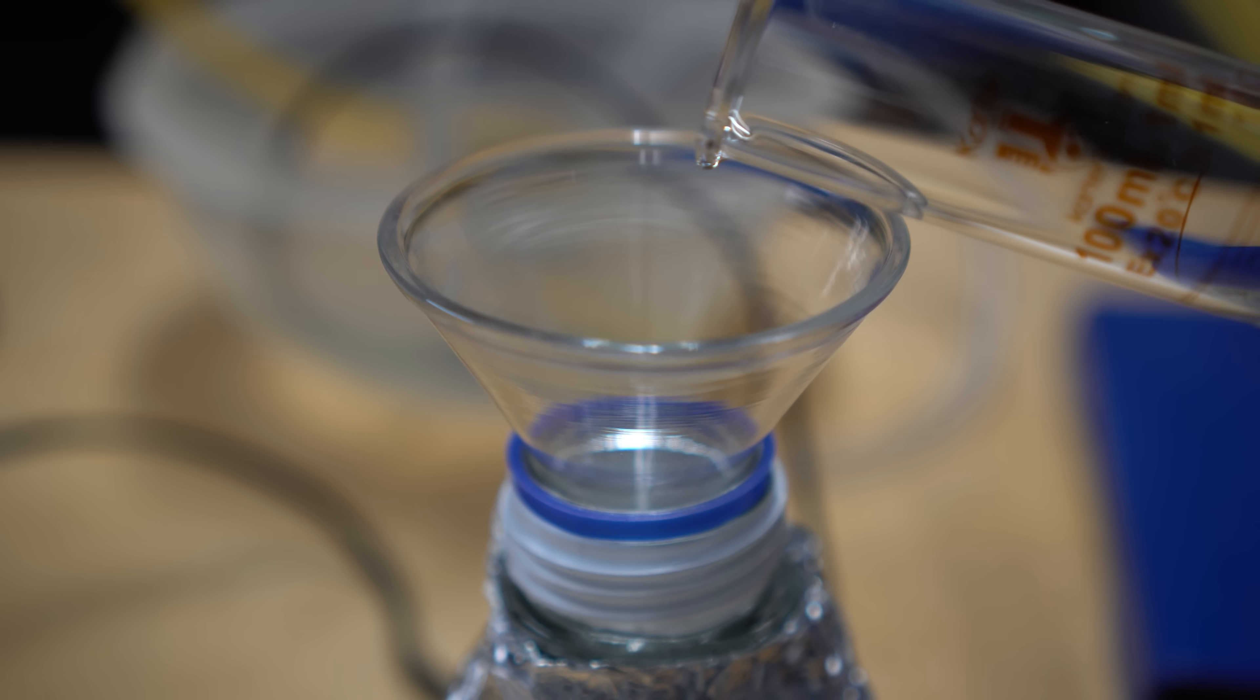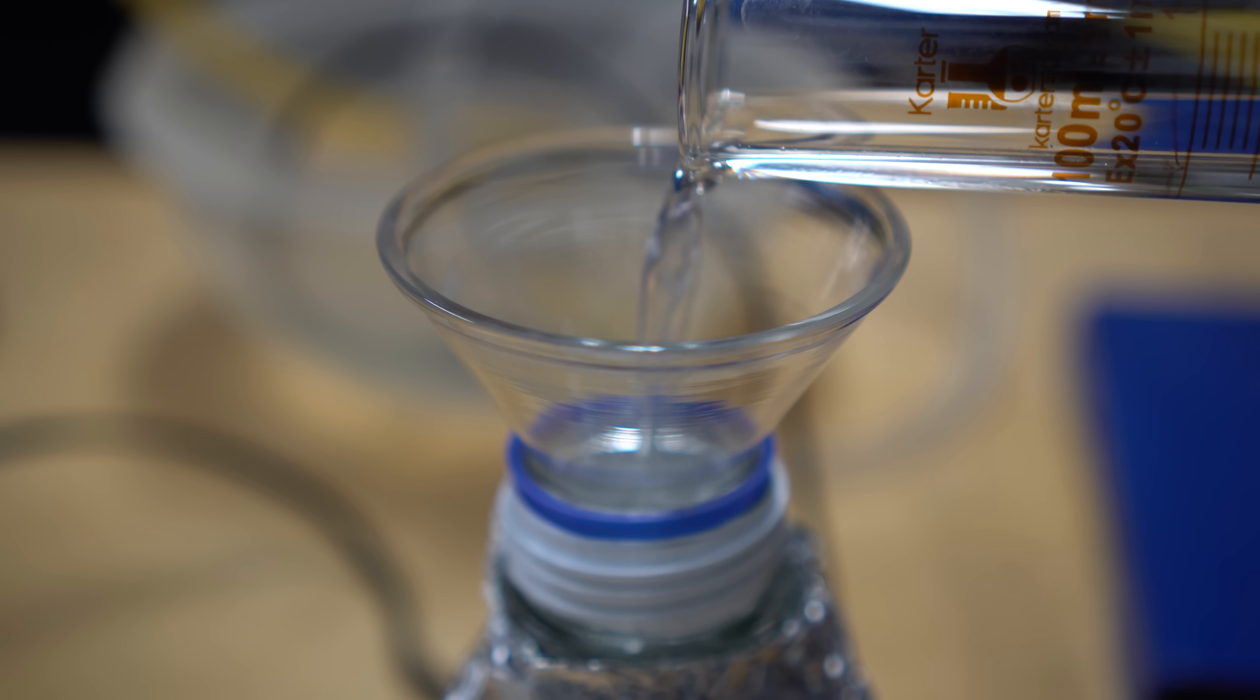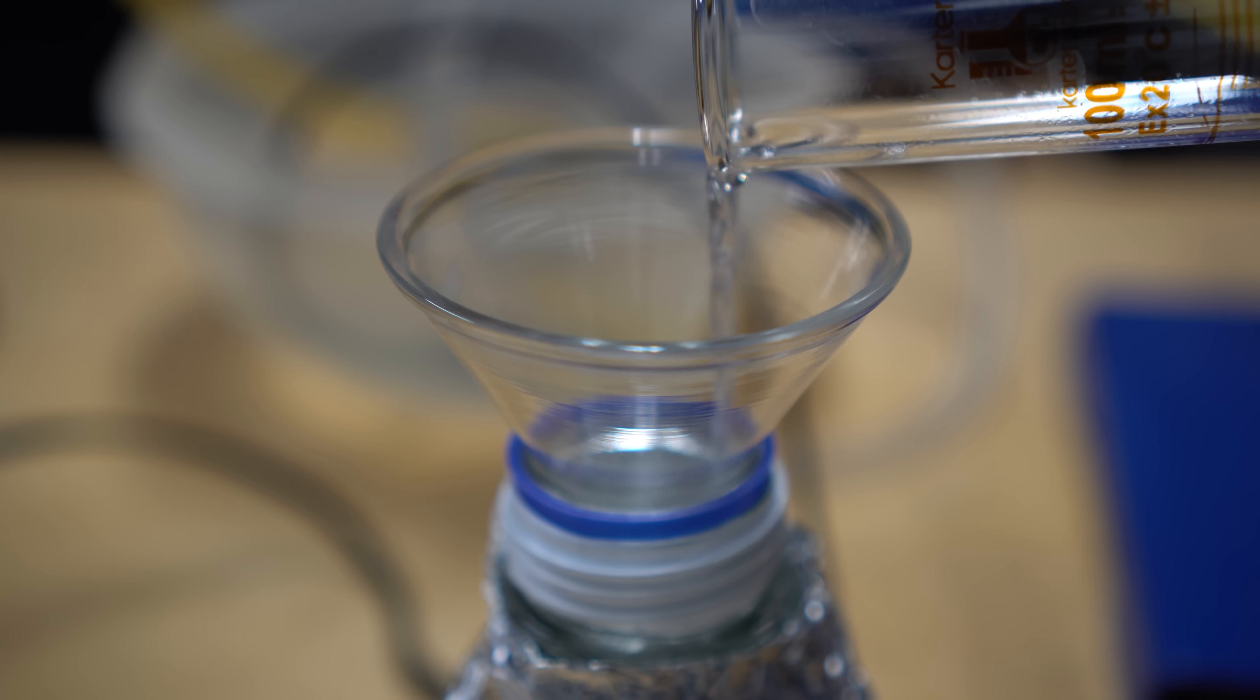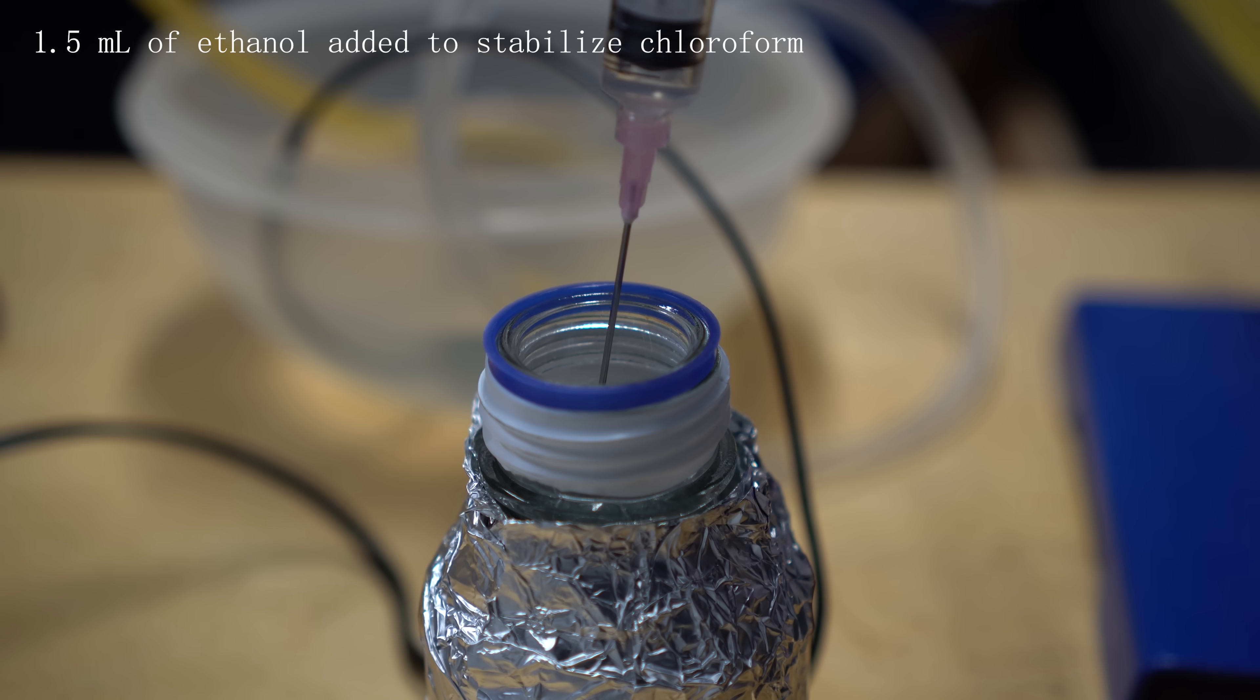Everything was poured into a glass bottle with aluminum foil wrapped around the bottle. This is because we don't want any UV light because phosgene production can happen as chloroform degrades. 1.5 milliliters of absolute ethanol was added to the chloroform to prevent the formation of phosgene. I mean, it was just used in World War I as a biochemical weapon, but who am I to judge?